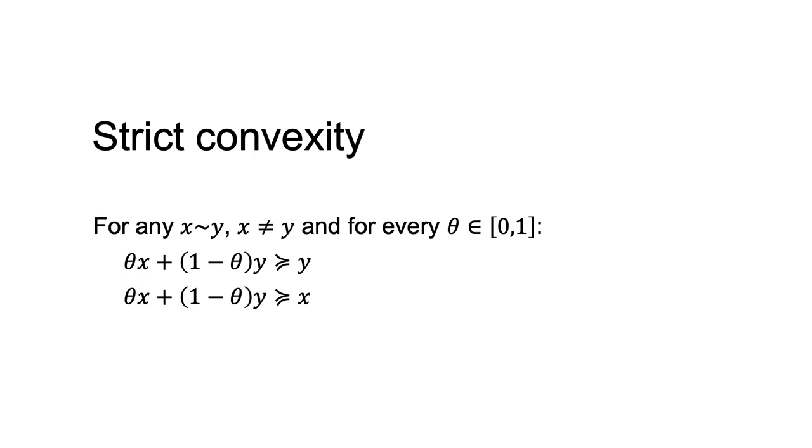theta times x plus 1 minus theta times y is weakly preferred to x. For two equivalent goods or bundles, a weighted average of the two bundles is better than each of those bundles.